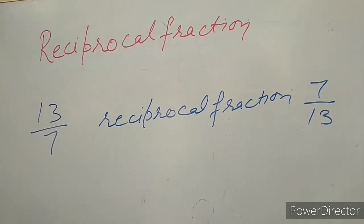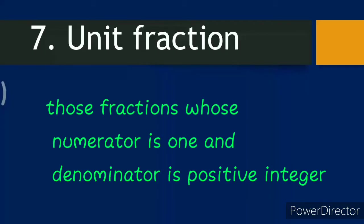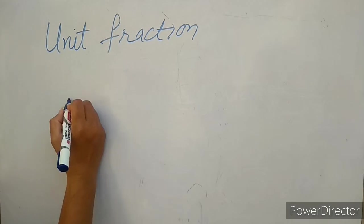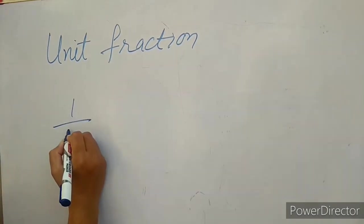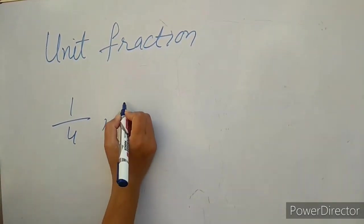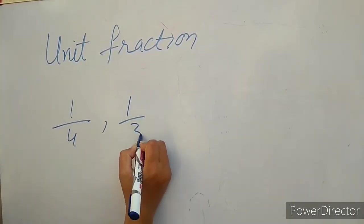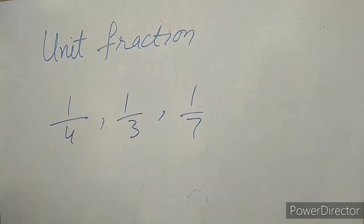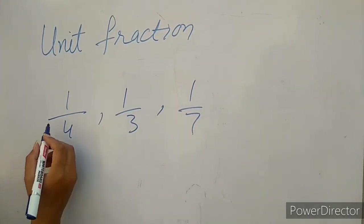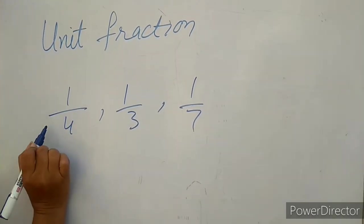Unit fraction: those fractions whose numerator is 1 and denominator is a positive integer are called unit fractions. For example, one over four, one over three, one over seven — these are all unit fractions because their numerator is 1.